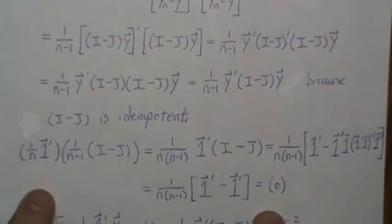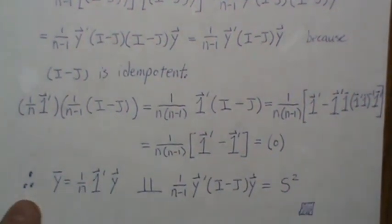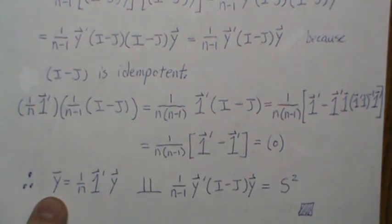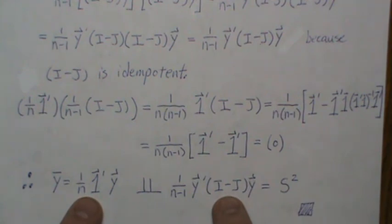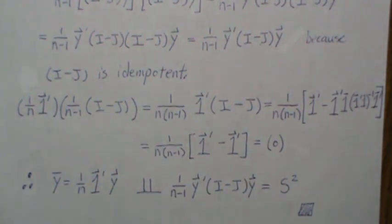And so this product is zero. And that implies that the sample mean and the sample variance are independent. This is written in matrix form. They're independent. And that's a third proof that we have on this channel.